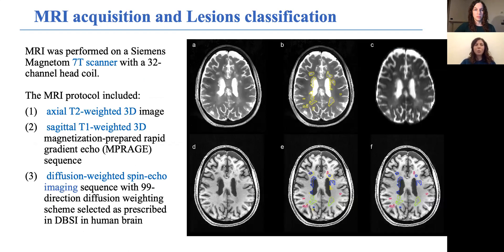Our imaging protocol was acquired on a 7-Tesla scanner. T1 and T2-weighted sequences were acquired to identify and classify lesions. Lesion volume was obtained with a semi-automatic segmentation technique, while in a second step, we used an in-house algorithm to automatically classify each T2 hyper-intense lesion as either T1-weighted iso-intense, hyper-intense lesion, or black hole.